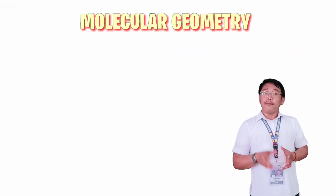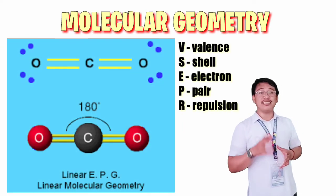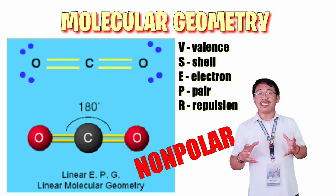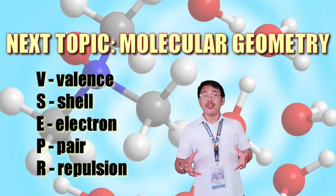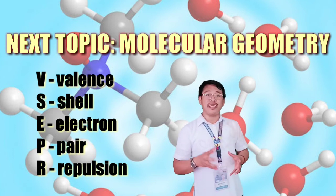However, based on the molecular geometry or the shape of the molecules, carbon dioxide is a linear molecule, making it a non-polar molecule. We will discuss this topic about molecular geometry or the shape of the molecules in our next video.